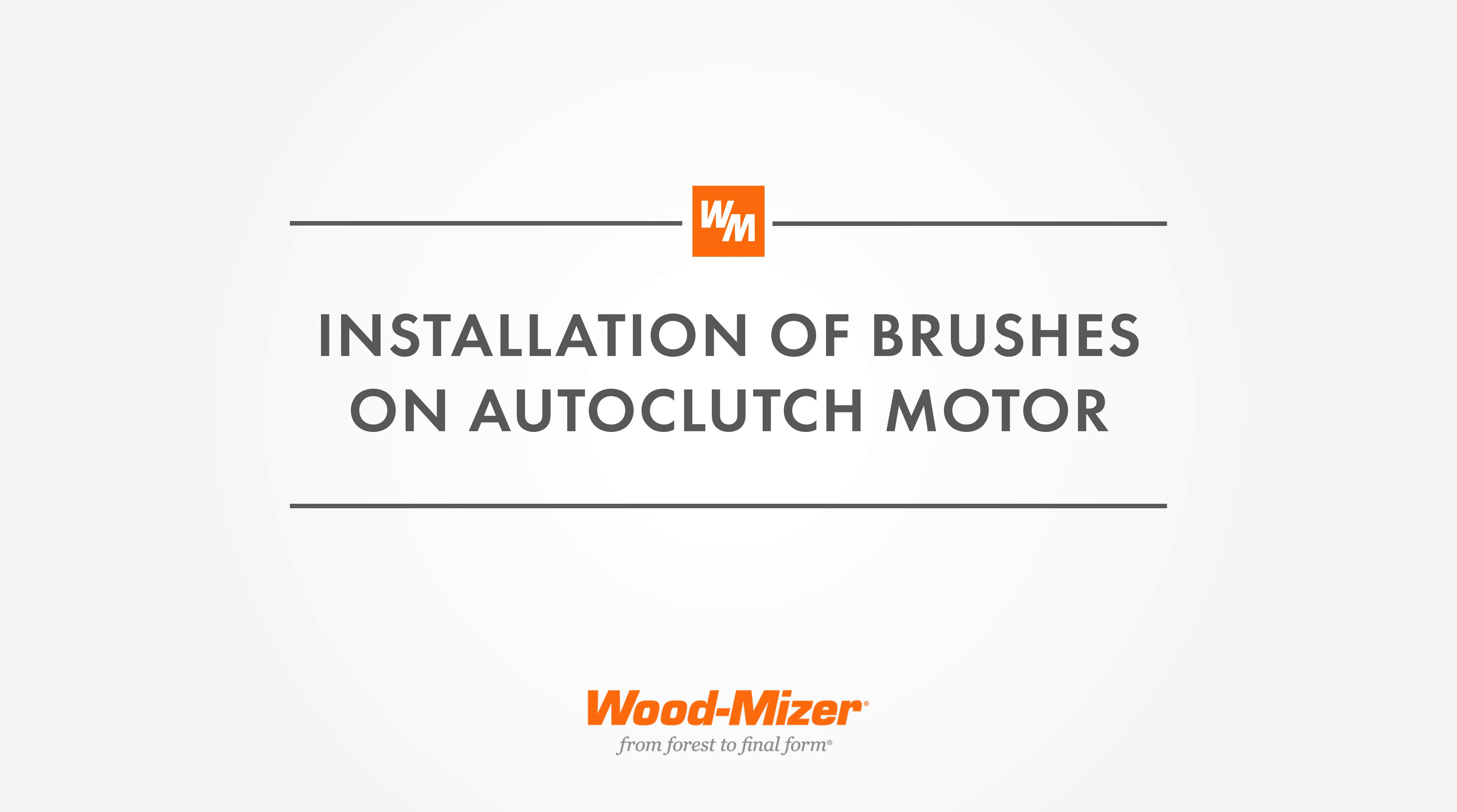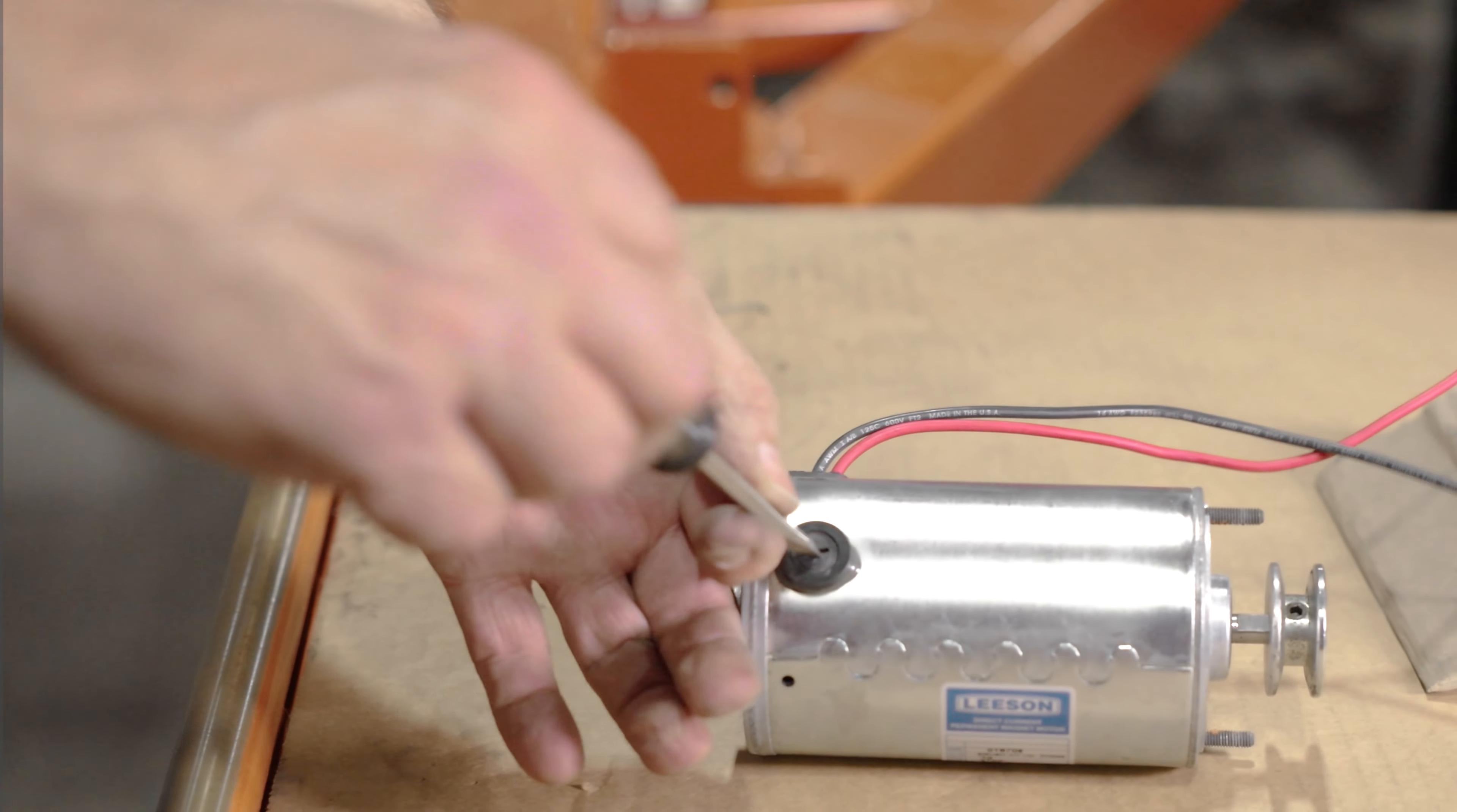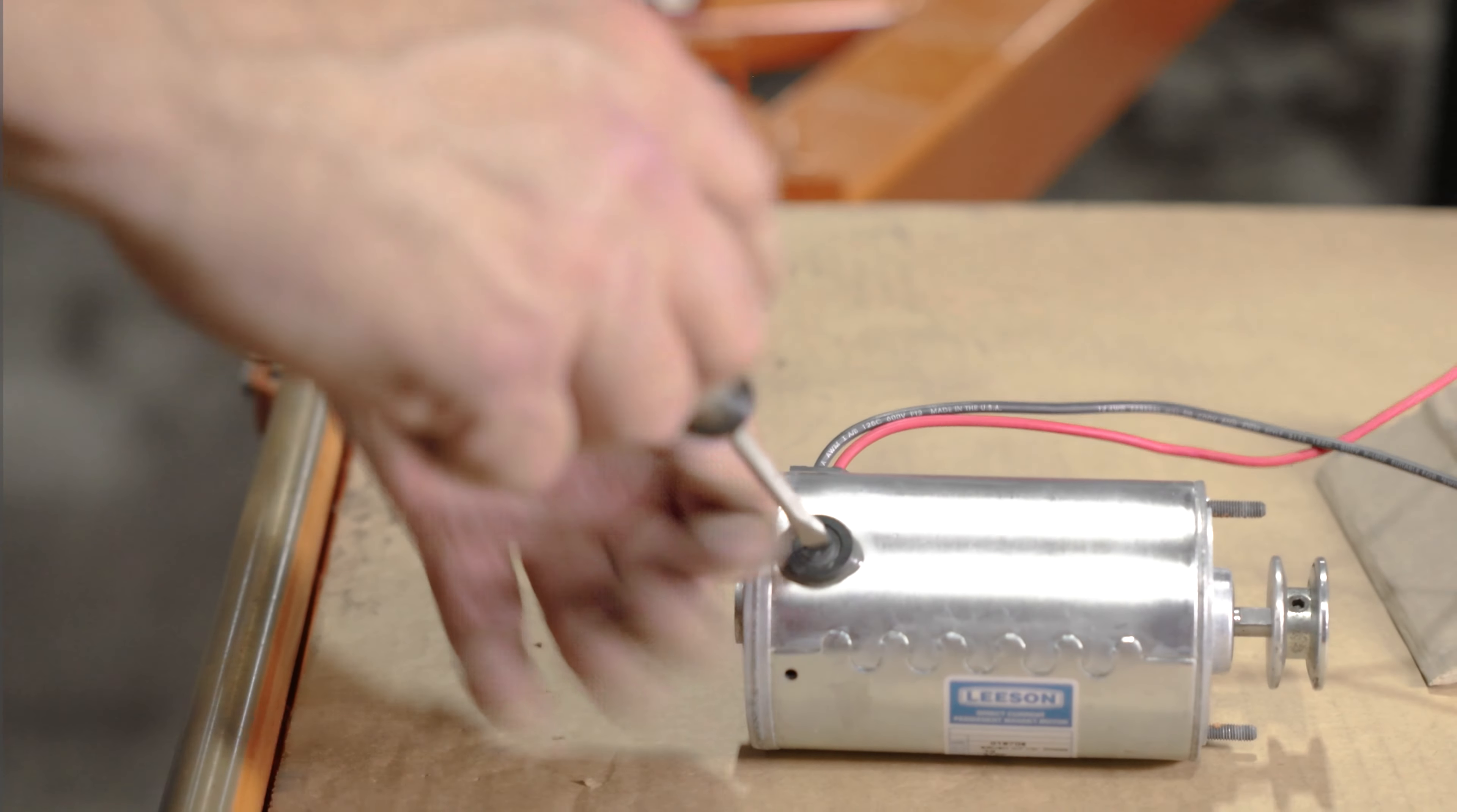This autoclutch motor has external brushes, as you can see with the end caps, and it's a very easy process to remove and reinstall these.